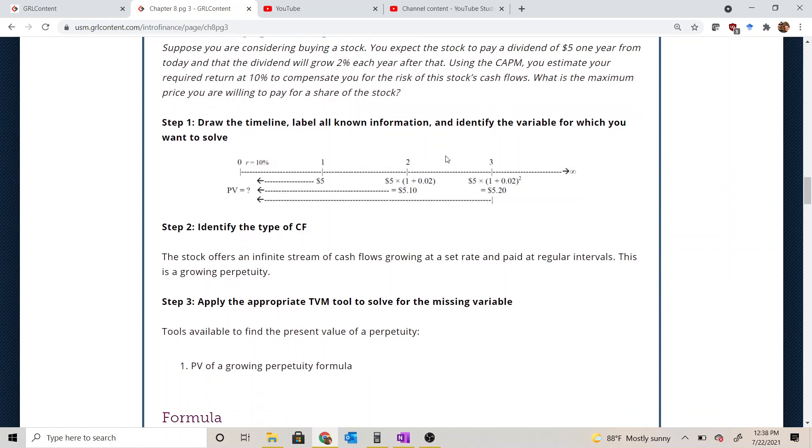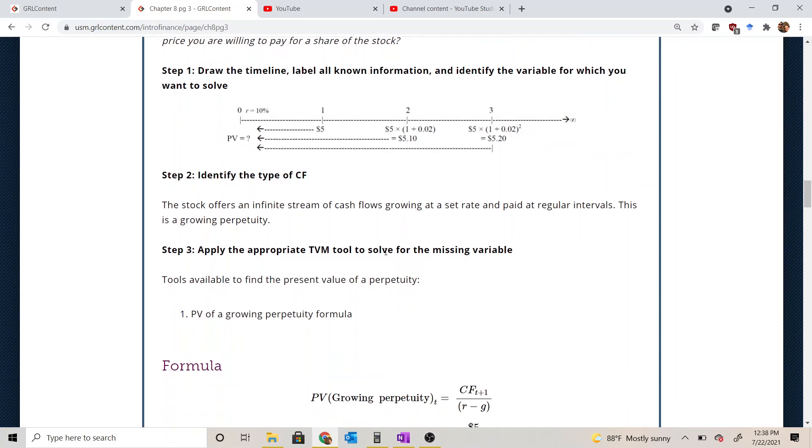Alright, so that's how we use the information from the dividend discount model. We'll calculate an intrinsic price, what we think it's actually worth, and then we'll go and take that price that we calculated and compare it to the price that the stock is actually trading for out in the market, and we can use that to make buy or sell decisions, which we'll do in future examples.